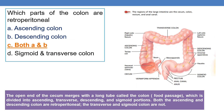Which parts of the colon are retroperitoneal? The colon is divided into four parts: ascending colon, transverse colon, descending colon, and the S-shaped sigmoid colon. Both the ascending colon and descending colon are retroperitoneal, whereas the transverse colon and sigmoid colon are not. So the correct answer is option C, both A and B — ascending colon and descending colon.